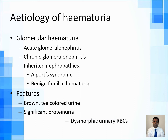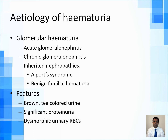Dysmorphic urinary red blood cells are again a feature of glomerular hematuria. To be absolutely sure it is glomerular, the dysmorphic cell percentage should be higher than 80%. If the dysmorphic cell percentage is less than 20%, you can say it is extra-glomerular, not glomerular hematuria.